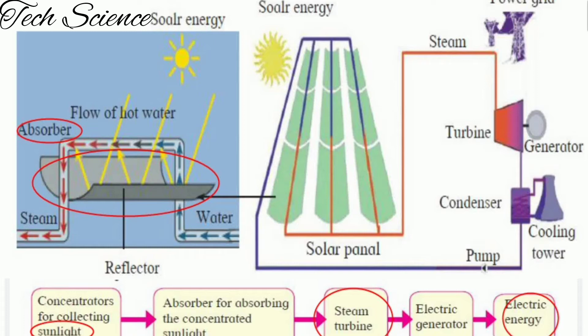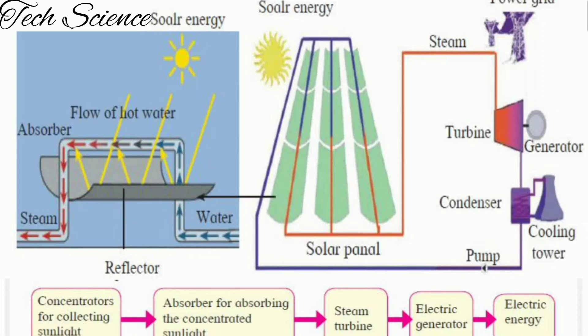This steam falls on the steam turbine, which in turn rotates the turbine. When the turbine rotates, the electrical generator also rotates, and inside the generator the magnet starts rotating. Based on the principle of electromagnetic induction, electrical energy is produced. This is the energy flow or schematic flow chart for the solar thermal power plant.